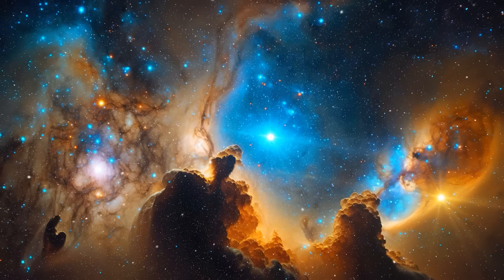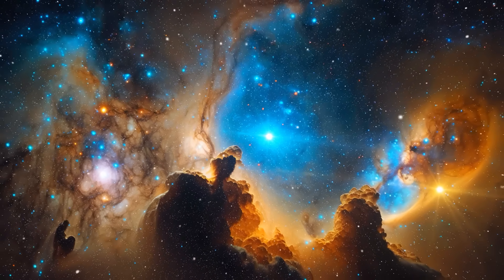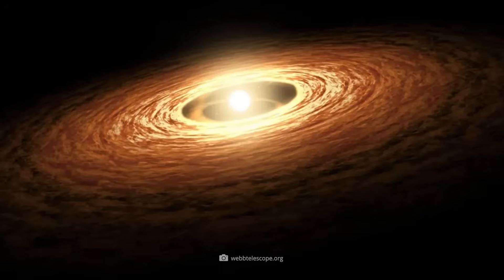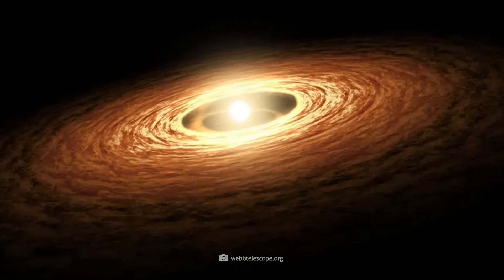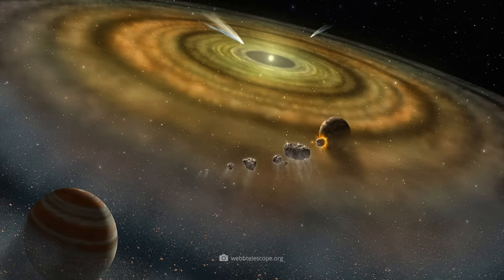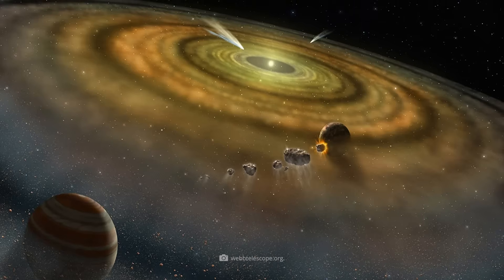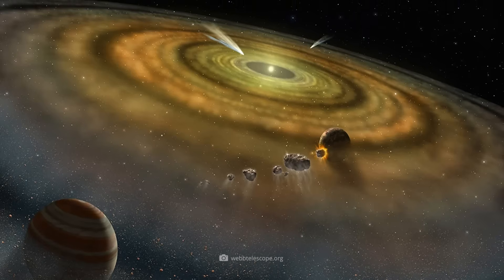Star births are events that take tens to hundreds of thousands of years. After the star has formed inside, the remnants of dust and gas give rise to planets. Our solar system looked similar 4.5 billion years ago.